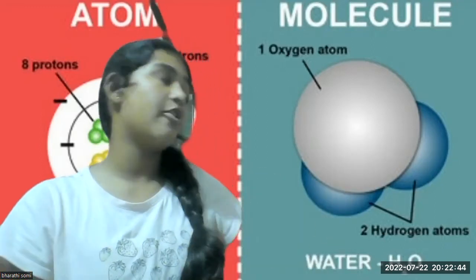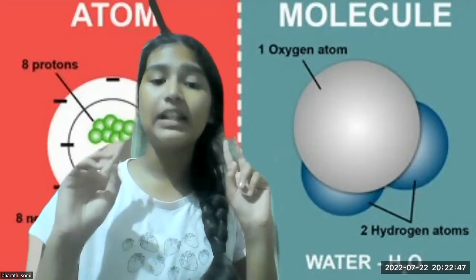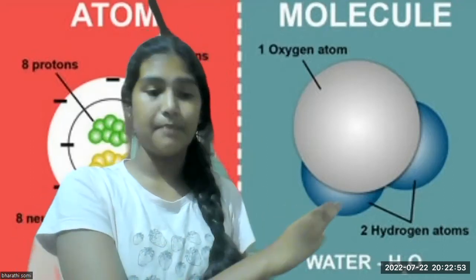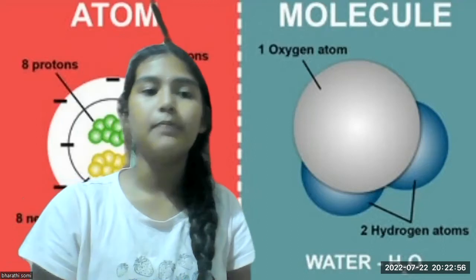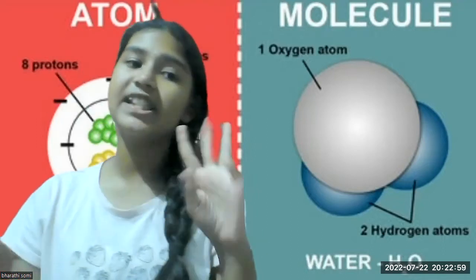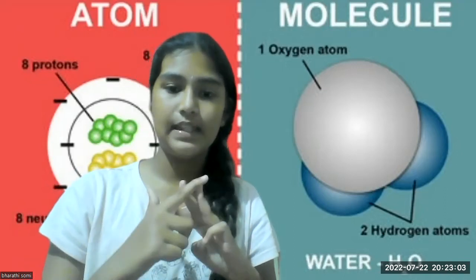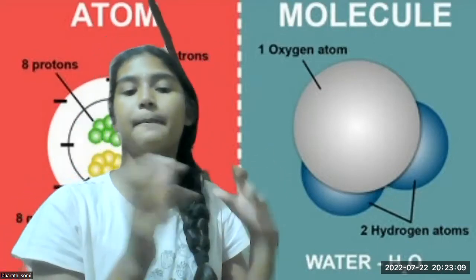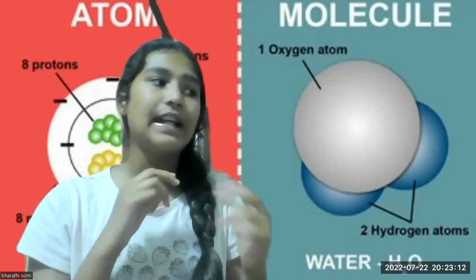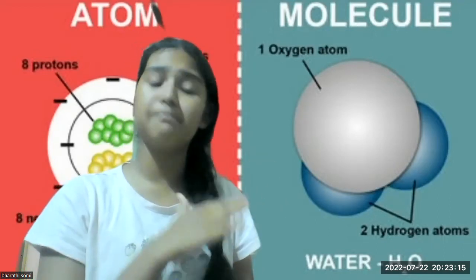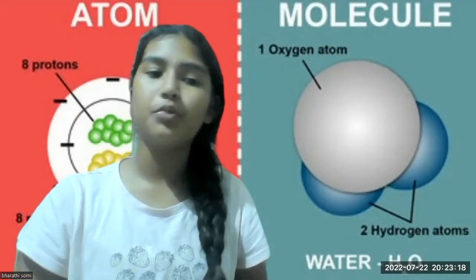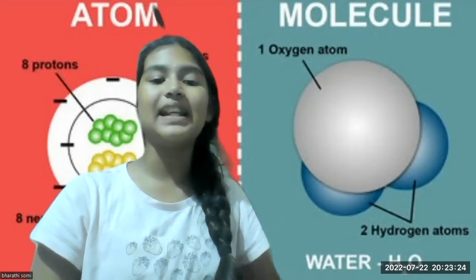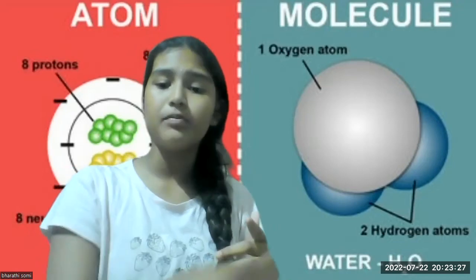All three types of matter — solid, liquid, and gas — are made up of molecules. Matter forms in these three different groups depending on how tightly the molecules are packed, what the intermolecular force is, and the space between molecules. Let's see what the three types of matter are before going deeper into intermolecular force and space.